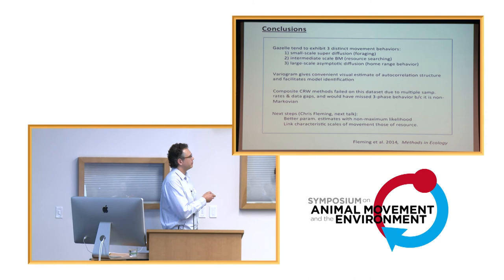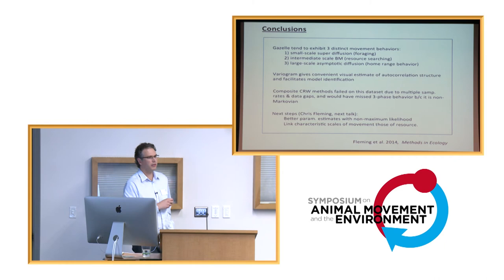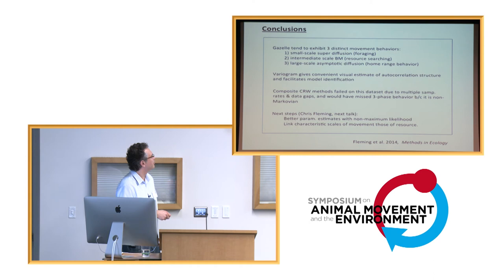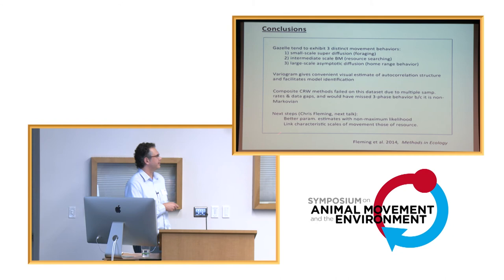So in the next talk, Chris is going to pick up on this and first talk a little bit about how you can get better estimates once you know what a good model for the data are using a full non-Markovian maximum likelihood analysis, and then he's going to link the characteristic scale of the movement to those of the resources that might be driving the movement. So that work is in press now at Methods in Ecology. The stuff I've talked about in this talk is in the May issue of American Naturalist. Thank you.